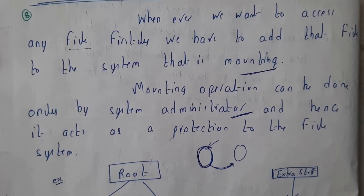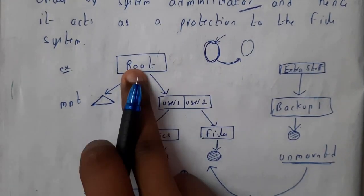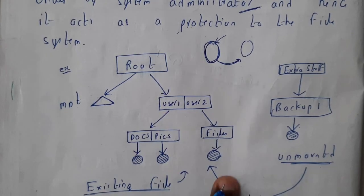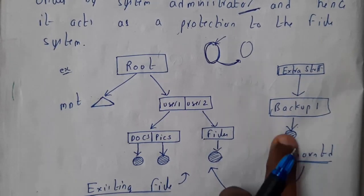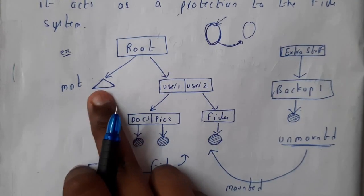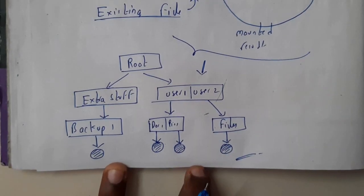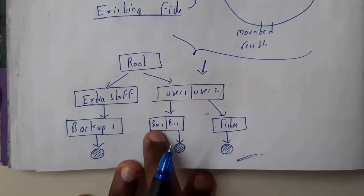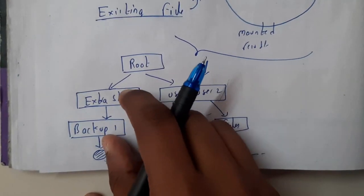For a small example — this is our existing file system root. There is a mounting place here, and user 1 and user 2 have their own files. We need to mount extra files, such as backup files, to this existing system. Once mounted, we pull it off and substitute it here, so this will be our new mounted file system: root, existing files, extra stuff, and user 1 and user 2 will have backup and all the files. This is nothing but mounting.